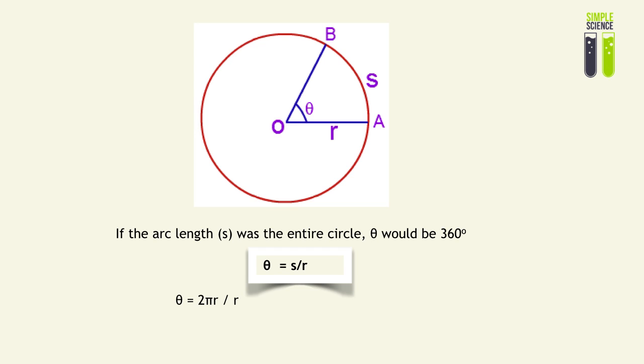And therefore, theta is equal to 2π, if we were to do the simple division. And since theta, in radians, would be equivalent to 360 degrees, and it is equal to 2π in radians, we can calculate what one radian is in that we take 360 degrees divided by 2π radians, and that should give us the value of the radian of 57.3 degrees.